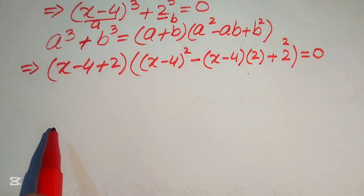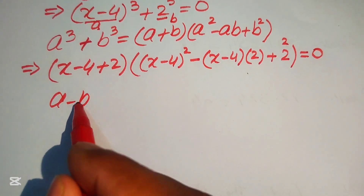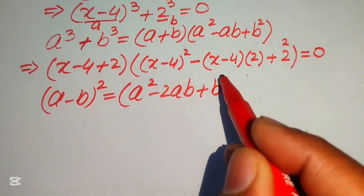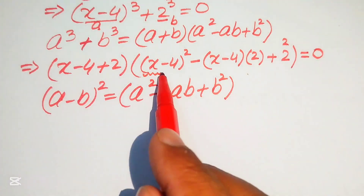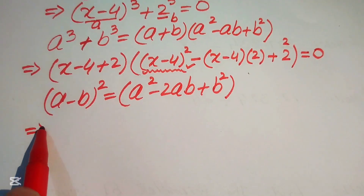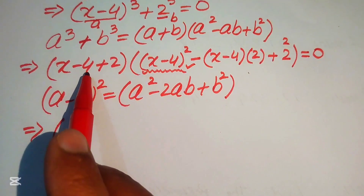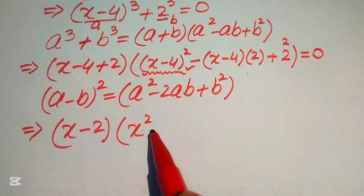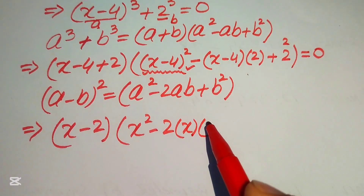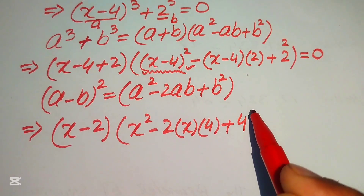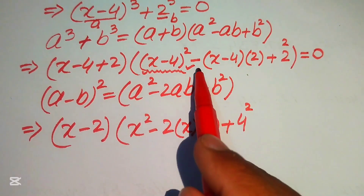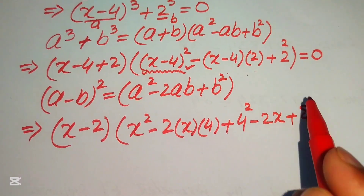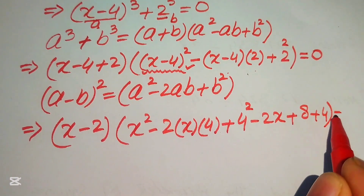We apply the square identity (a - b)² = a² - 2ab + b² to expand (x - 4)². So the equation becomes (x - 2) times [x² - 2(x)(4) + 4² - 2x + 8 + 4] = 0, which simplifies to (x - 2)(x² - 8x + 16 - 2x + 8 + 4) = 0.